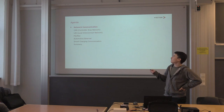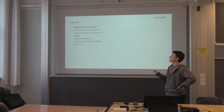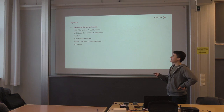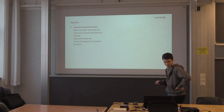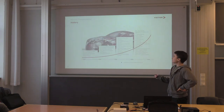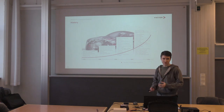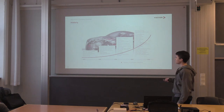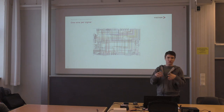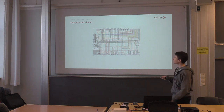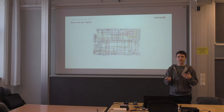Our agenda will start with an overview of network communication, then deep dive into CAN, LIN, FlexRay, automotive Ethernet, and smart charging. First, a bit of history: since the 1970s, the number of electronic functions inside vehicles has increased exponentially, resulting in far more cabling and more electromagnetic fields, which create electromagnetic disturbances inside the vehicle that all need to be handled somehow.